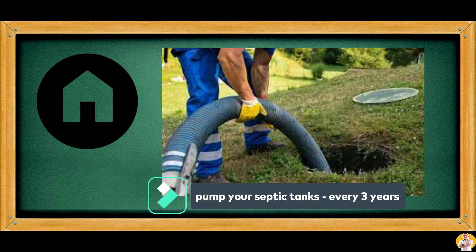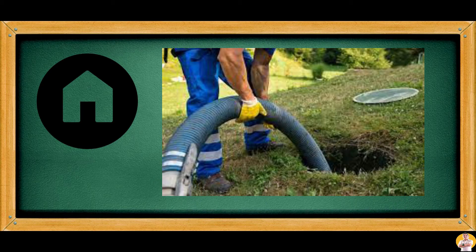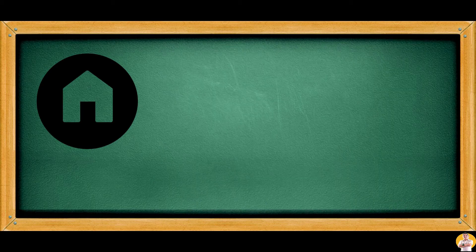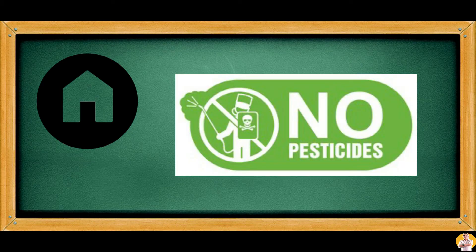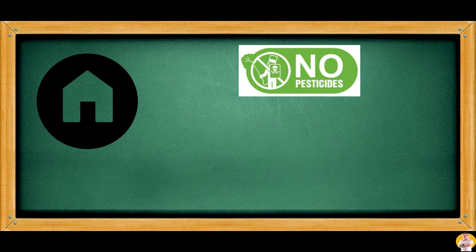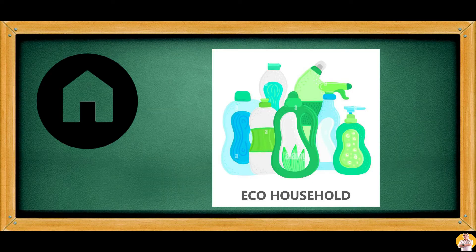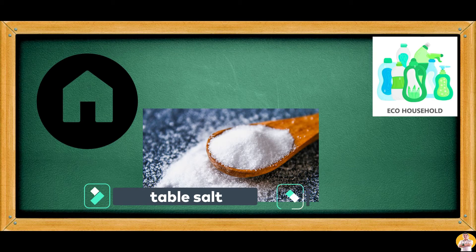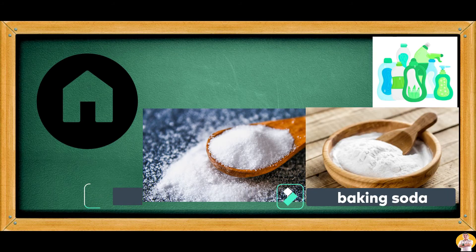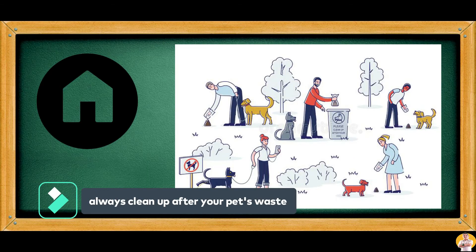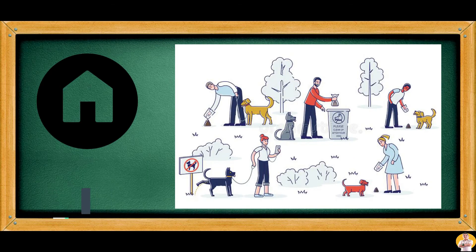Remind your parents to pump your septic tanks at least every three years. Use non-toxic pesticides — examples include a mixture of soft water and chili pepper. Excessive use of toxic pesticides can pollute nearby waterways. Look for natural alternatives to chemical-based household products, such as table salt and baking soda. Always clean up after your pet's waste, and never let their waste wash into waterways and end up polluting our estuaries.